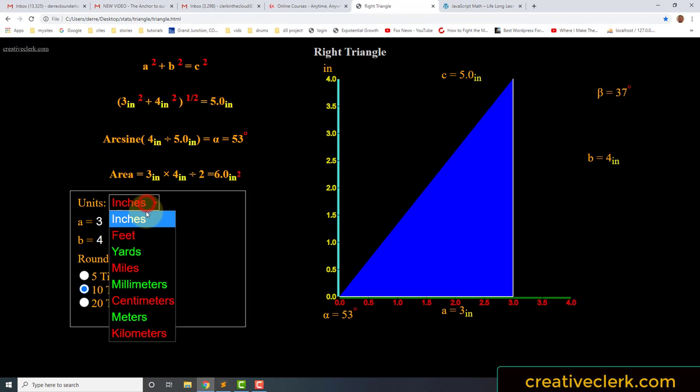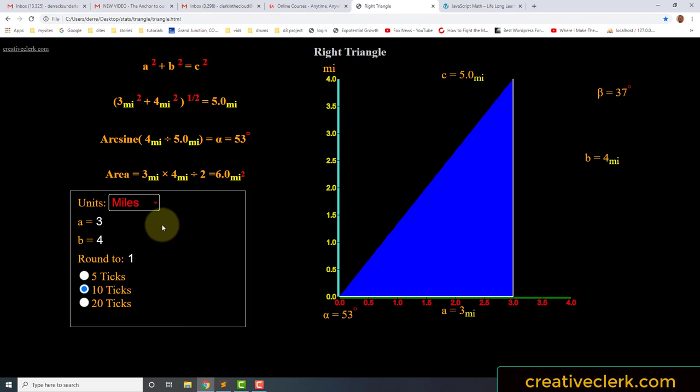This is a select element. We can choose any one of our dimensions. Now, the dimensions are not going to change any of our calculations, nor will they change the dimensions of the triangle. They're only the units,